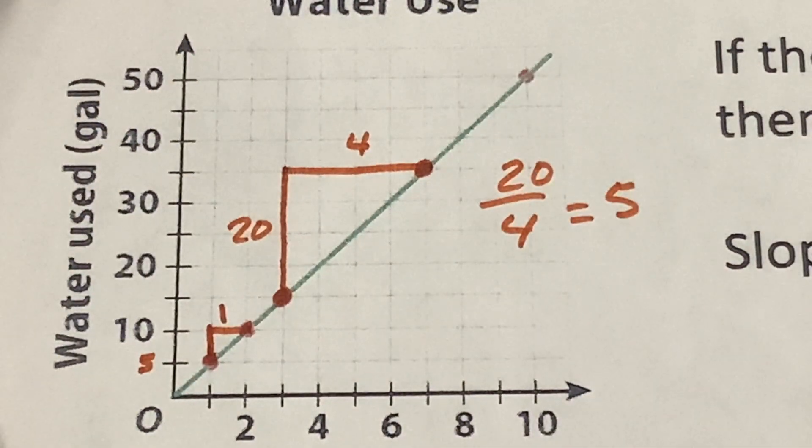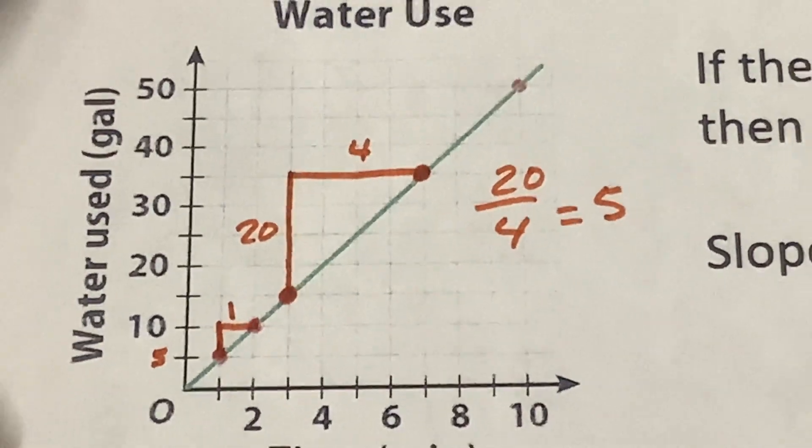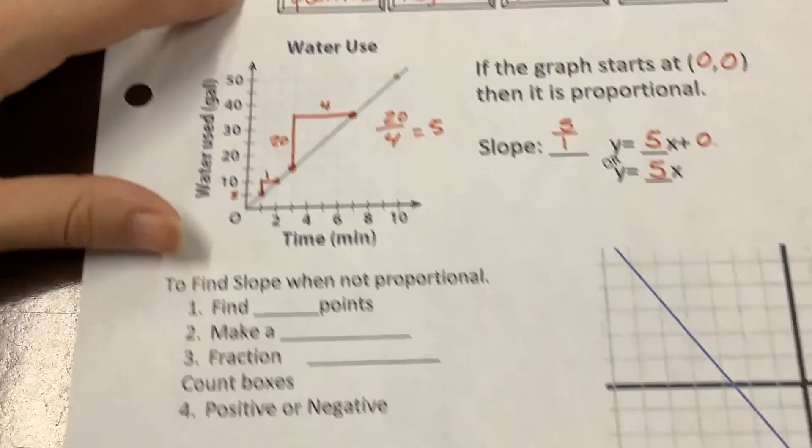So, it doesn't matter what points you choose to go from to count rise to run, you're going to get the same number. It's a lot like whenever we talk about constant rate in our tables. If it's linear, you're going to get the same number.